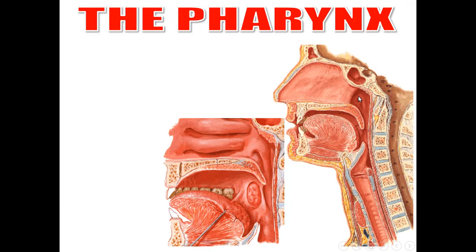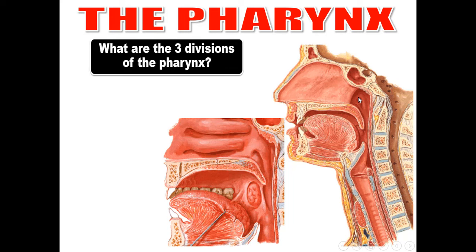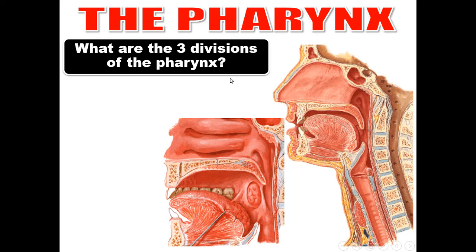Then the pharynx. What are the three divisions of the pharynx? The first is the nasopharynx, located behind the nasal cavity. The second is the oropharynx, present behind the oral cavity. The third is the laryngopharynx, located behind the larynx, and it is continuous with the esophagus.